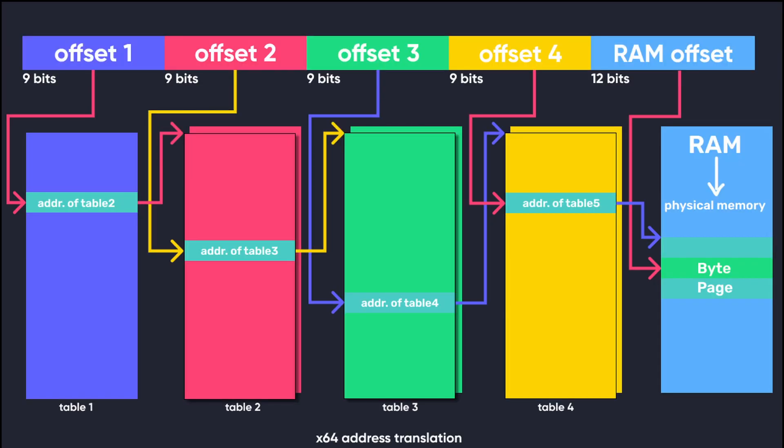What you see on your screen is a 64-bit virtual memory address, and this is how all of its 64-bits are translated into physical memory addresses. This may seem a bit complicated at first glance, but I'll break it down into individual steps so you can understand them easily.